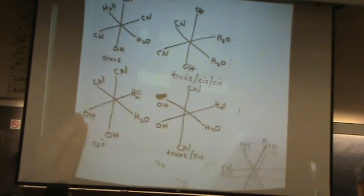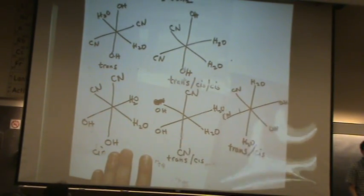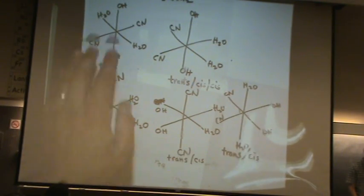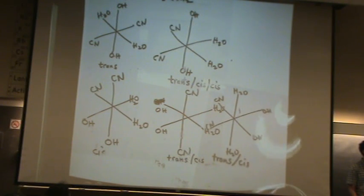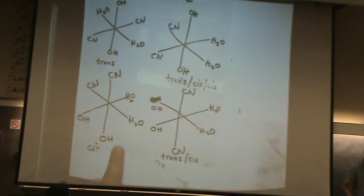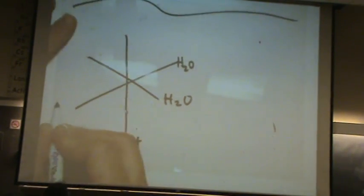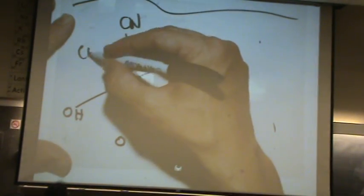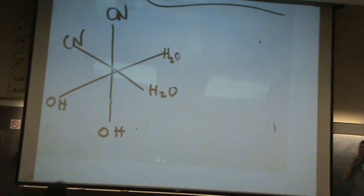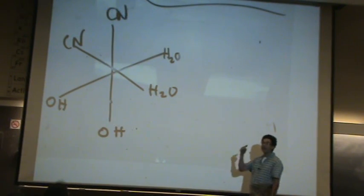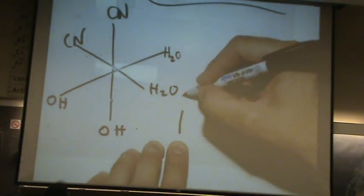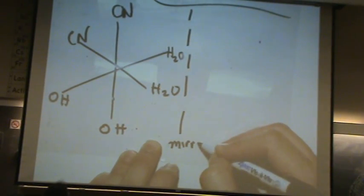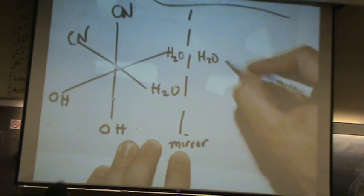You would see that these four are not going to be superimposable. So let me draw the mirror image of this one right here. Let me redraw that one I just had. That's the one we were just looking at, and they're all cis. All three: cis, cis, cis. The cyanide, the hydroxy, the water. I'm guessing this one has a non-superimposable mirror image. In fact, I'm not guessing, I know. This has a non-superimposable mirror image. Here's my mirror plane. Let's draw this out.